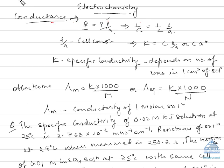Let's start with the topic conductance in electrochemistry. Conductance is the reciprocal of resistance. Resistance is equal to rho times L by A, where rho is the resistivity of the substance. So conductance (C) is equal to 1 by (kappa times L by A), where kappa is the specific conductivity of the solution.